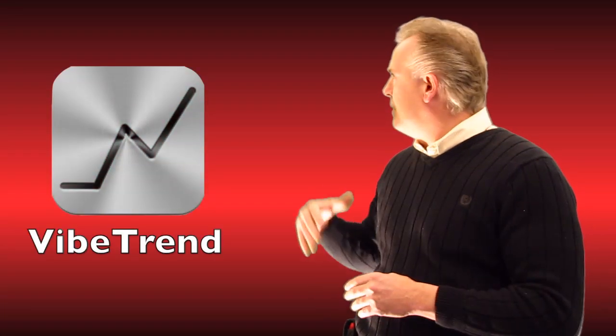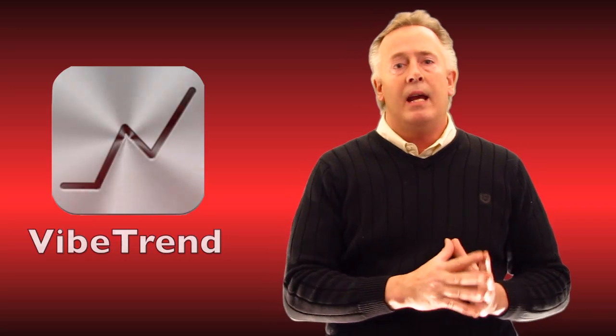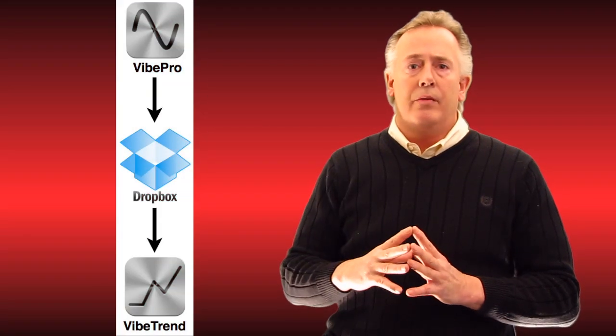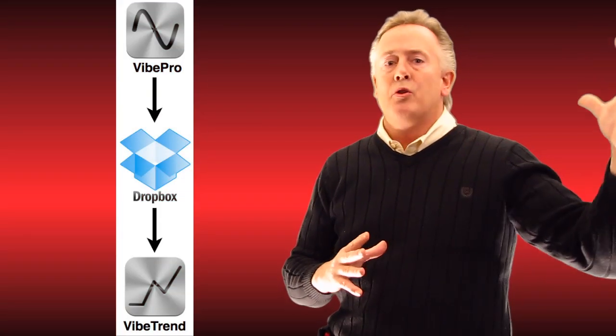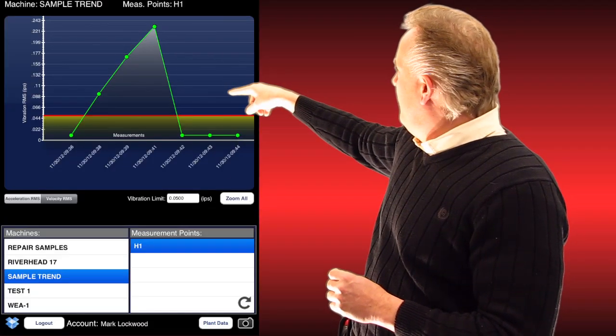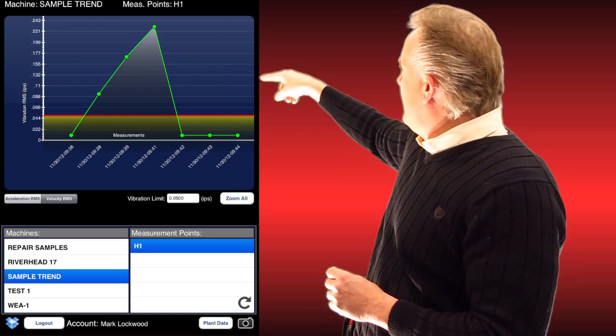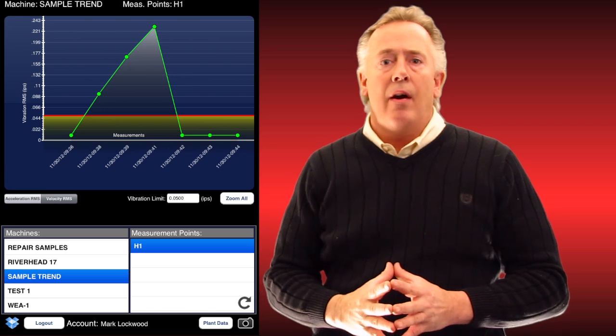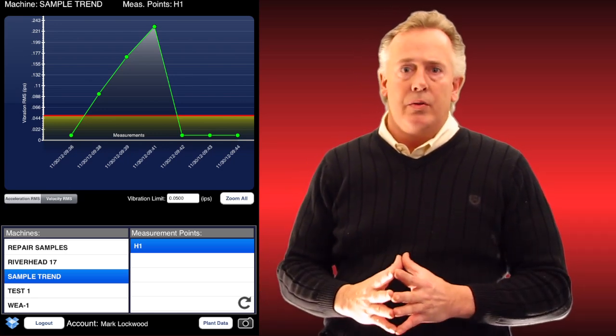I'd also like to put up VibeTrend, which works hand-in-hand with ViPro. VibeTrend pulls the data back down from the Dropbox cloud, and we're able to plot out a nice graph of where the data started and where it escalated as our assets degrade and get higher amplitudes in both velocity and acceleration. Very seamless way that we work our reporting and trending, all done up in the cloud so it can be pulled down at any time and observed through VibeTrend or Dropbox.